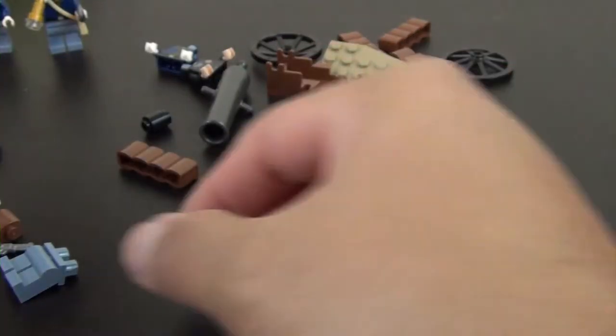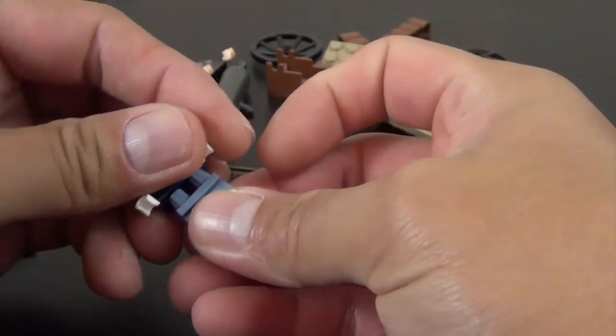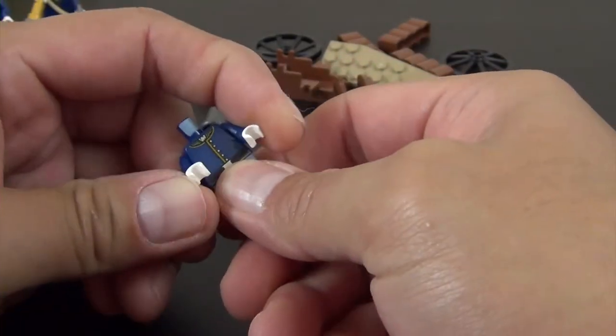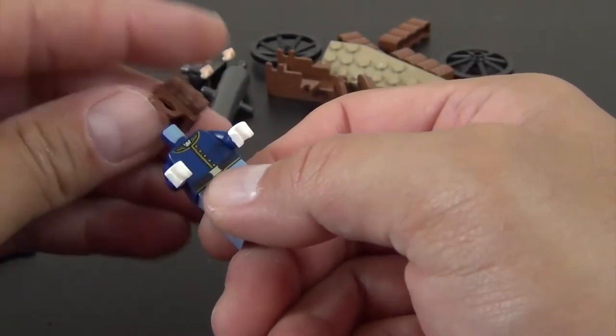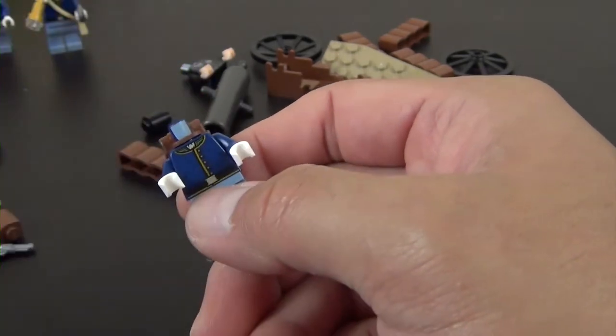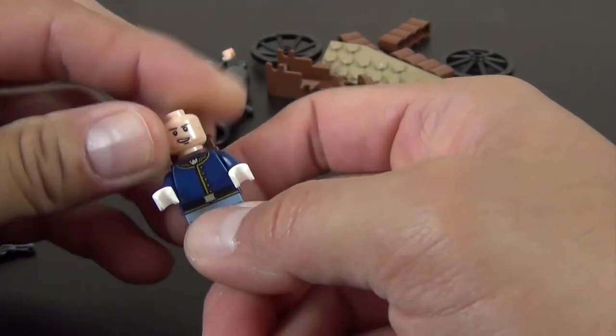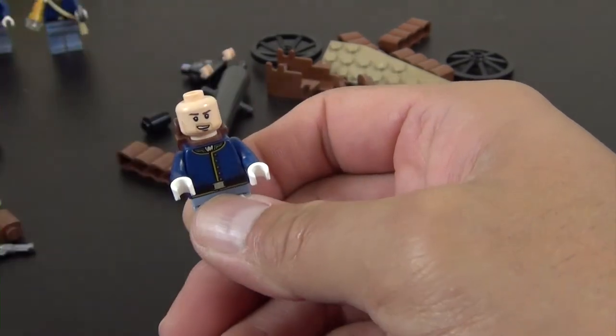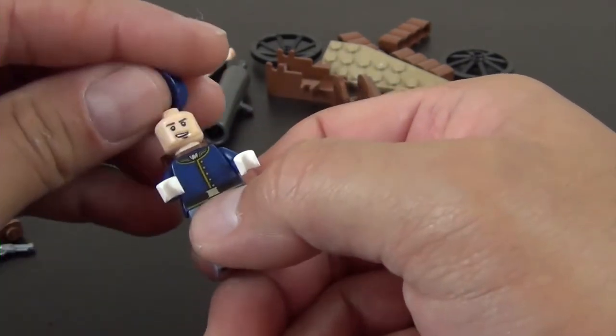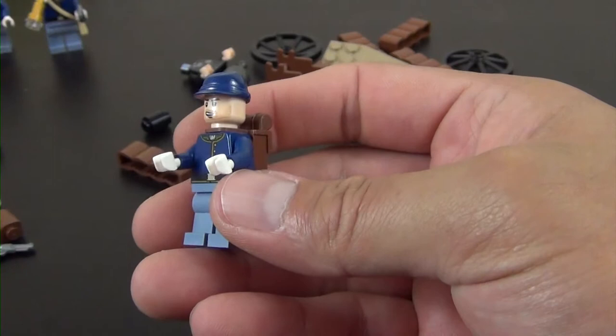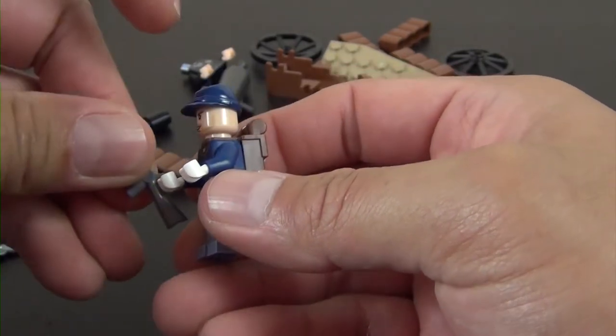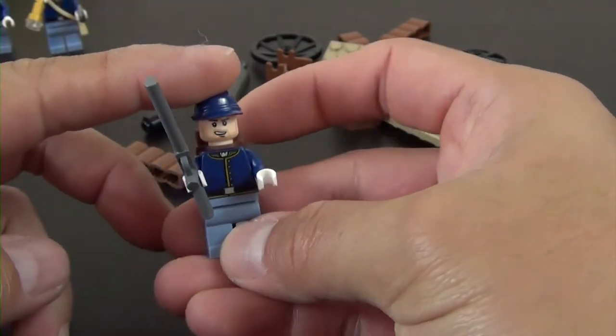All right, third one is pretty much identical to the previous one with the exception of the face has a different print on it, and he also has the rifle.